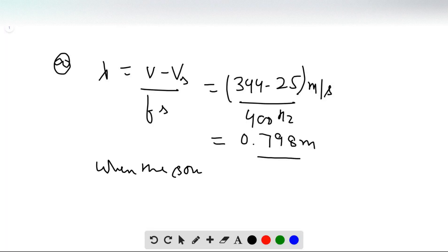When the source is at rest, we have lambda equals V over FS, which is 344 meters per second over 400 Hertz, which equals 0.860 meters.